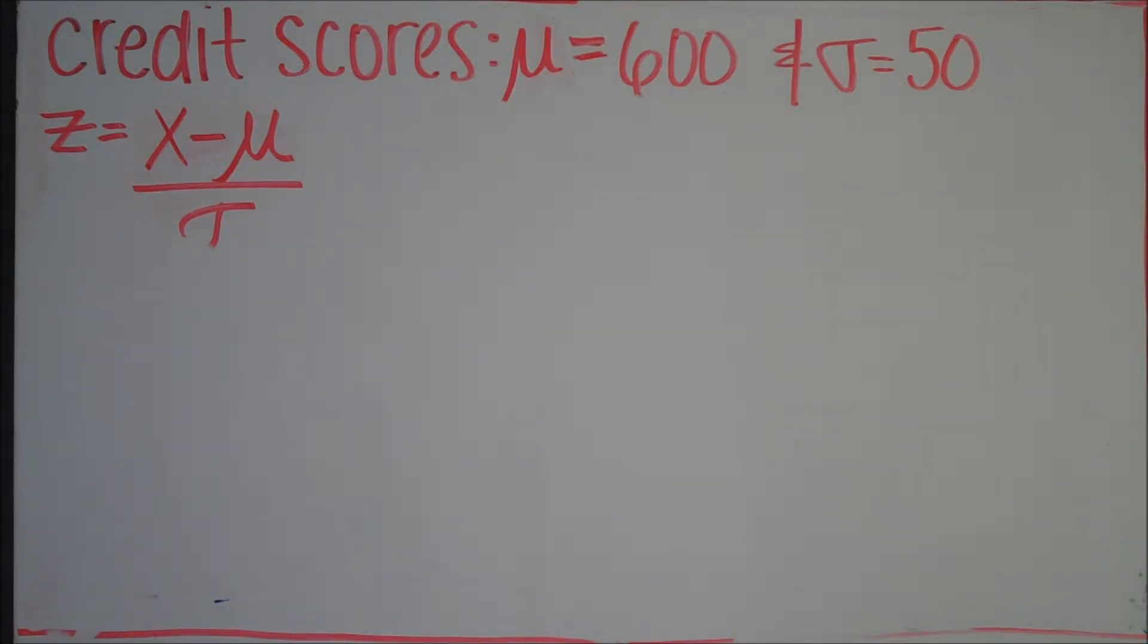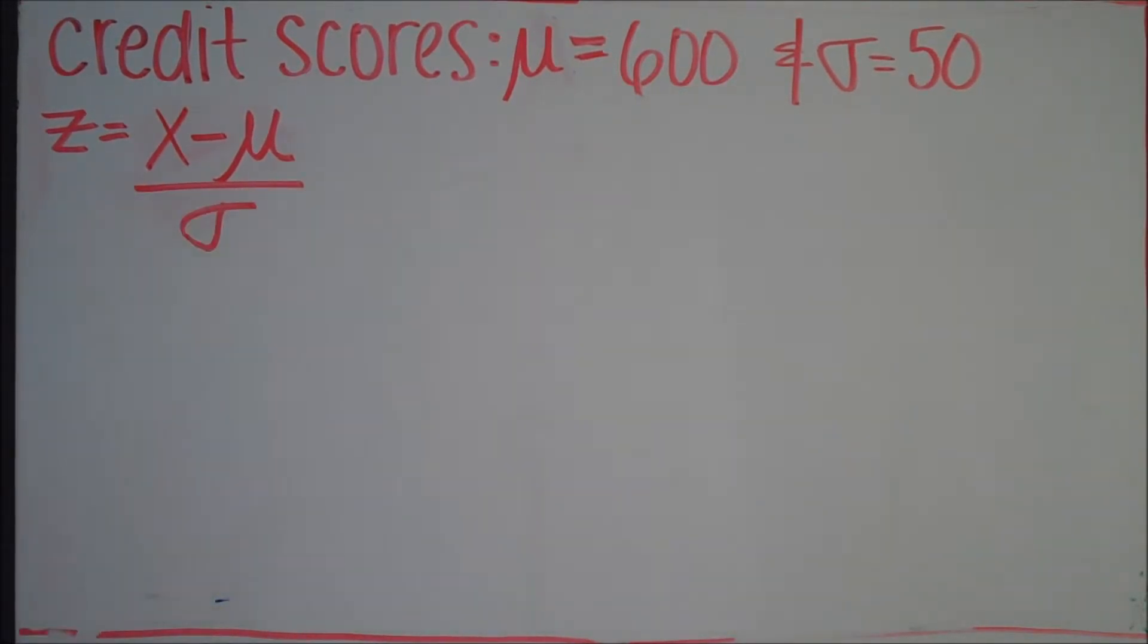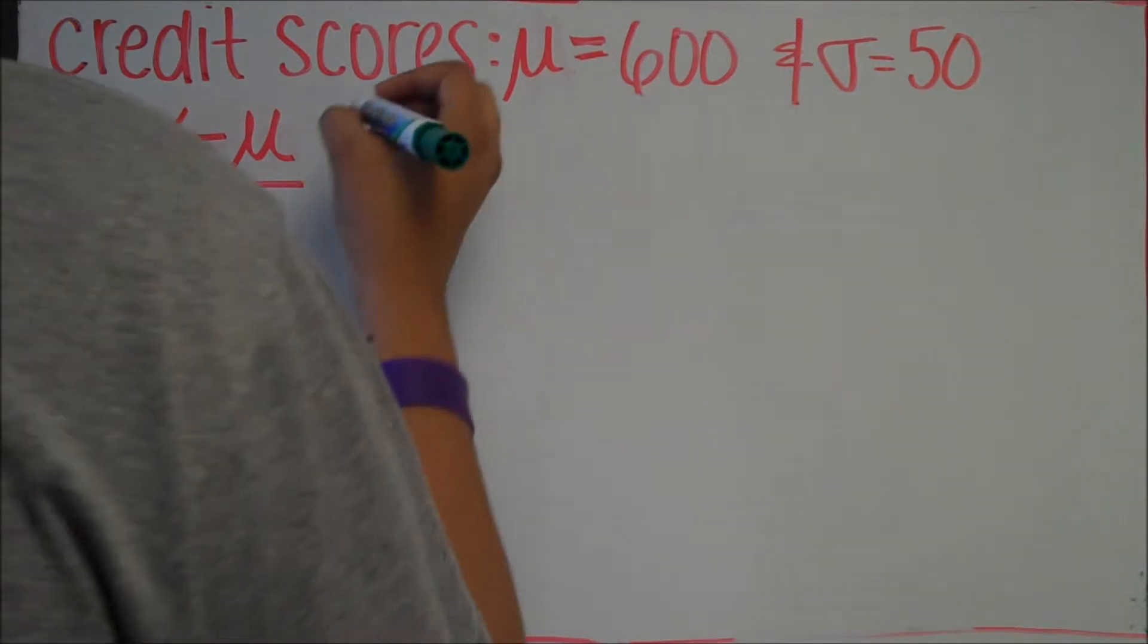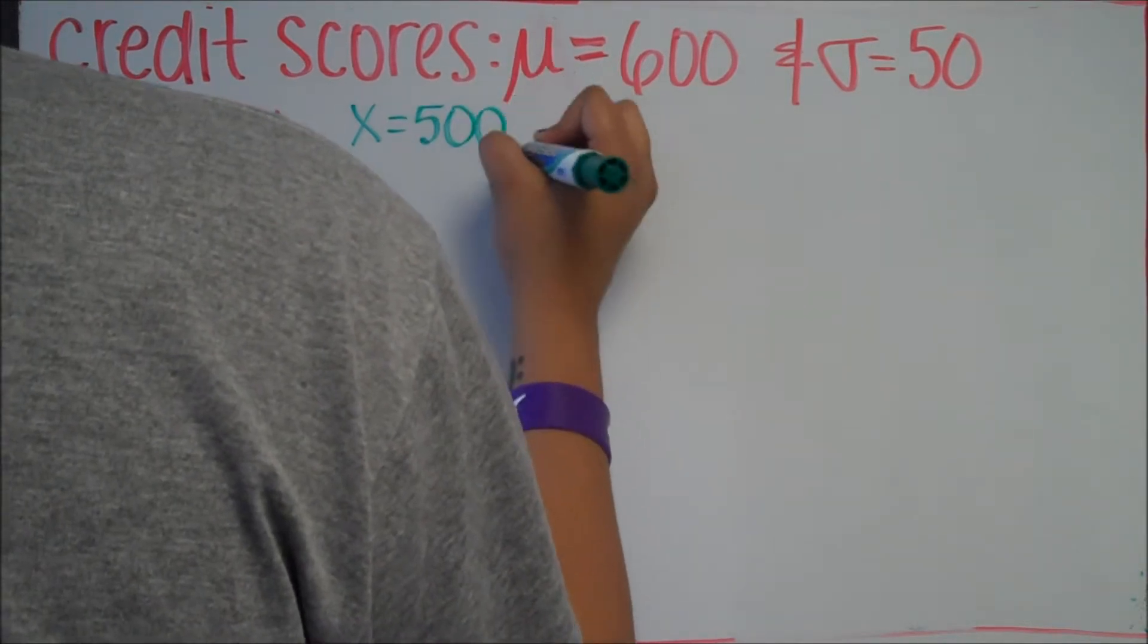The first thing we want to do is convert our x values to z-scores. Remember, the z-score equation is z equals x minus mu divided by the standard deviation.